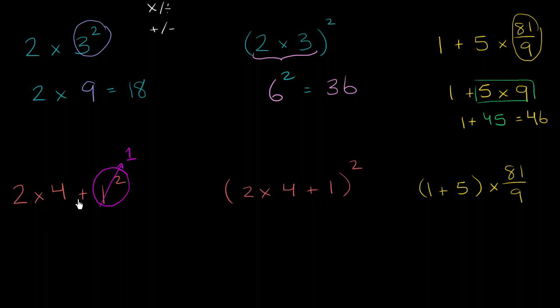What should you do? Should you add first or do the multiplication first? Well multiplication takes precedence over addition. So you're going to do the 2 times 4 first. 2 times 4 is 8. So you're going to have 8 plus 1, which of course is equal to 9.